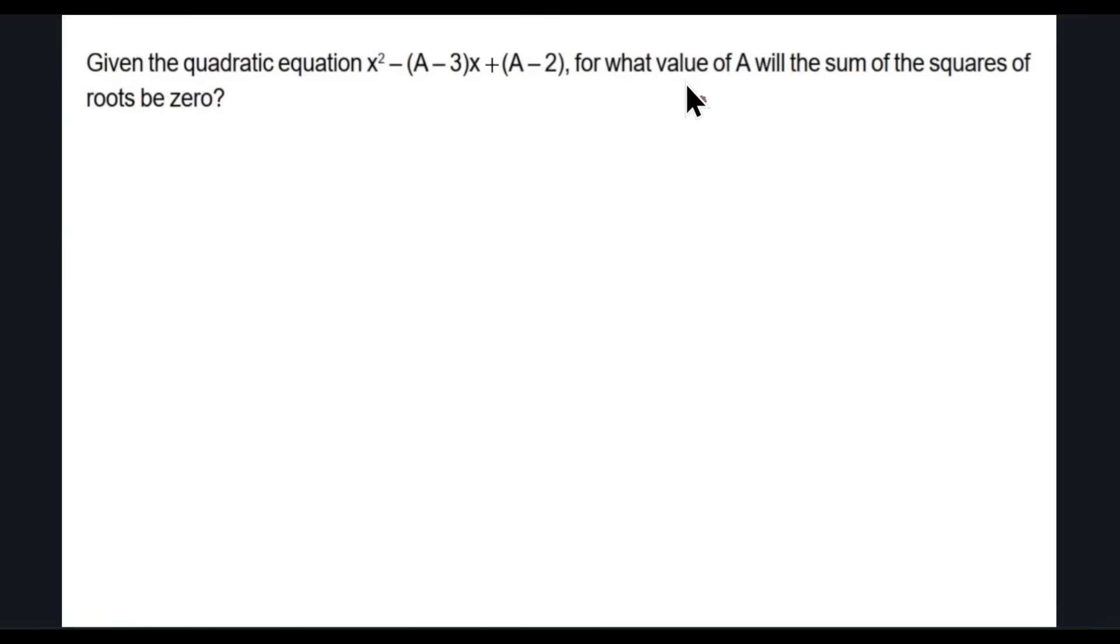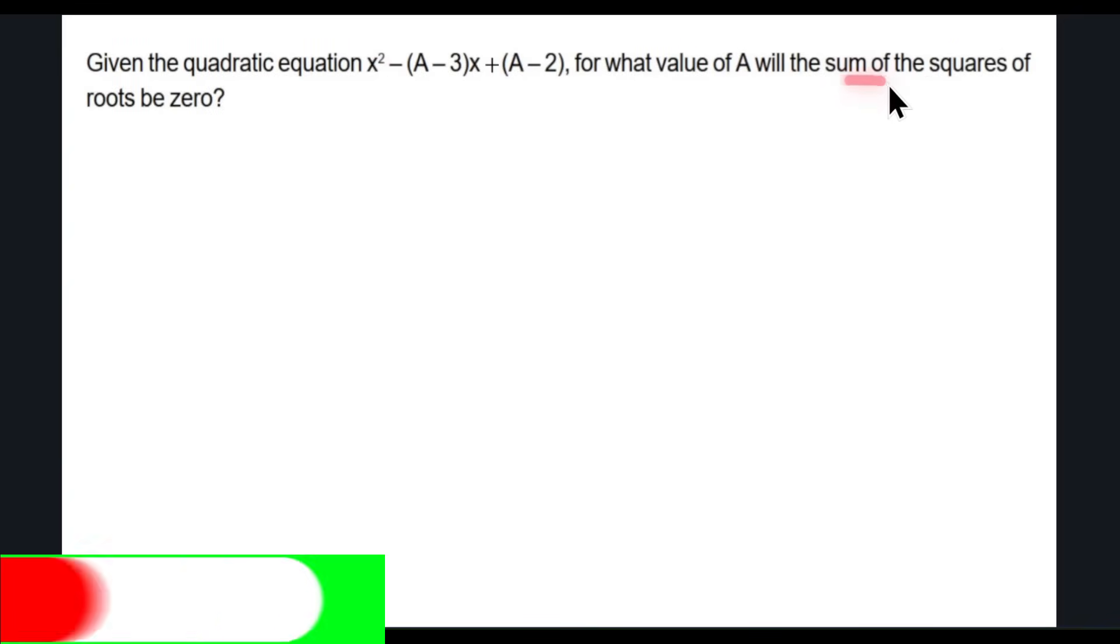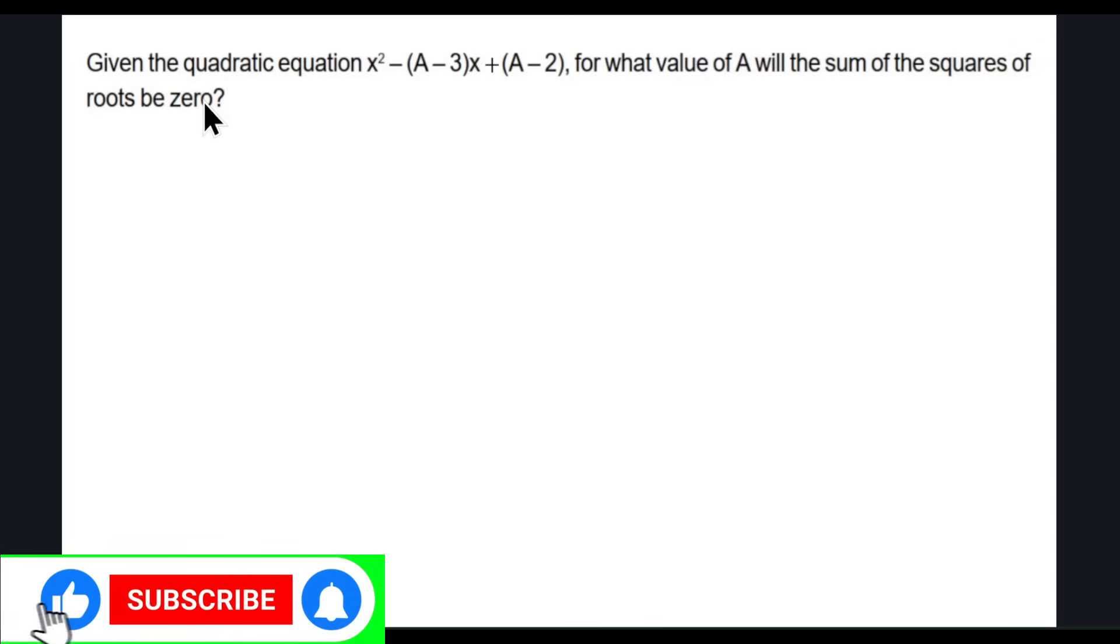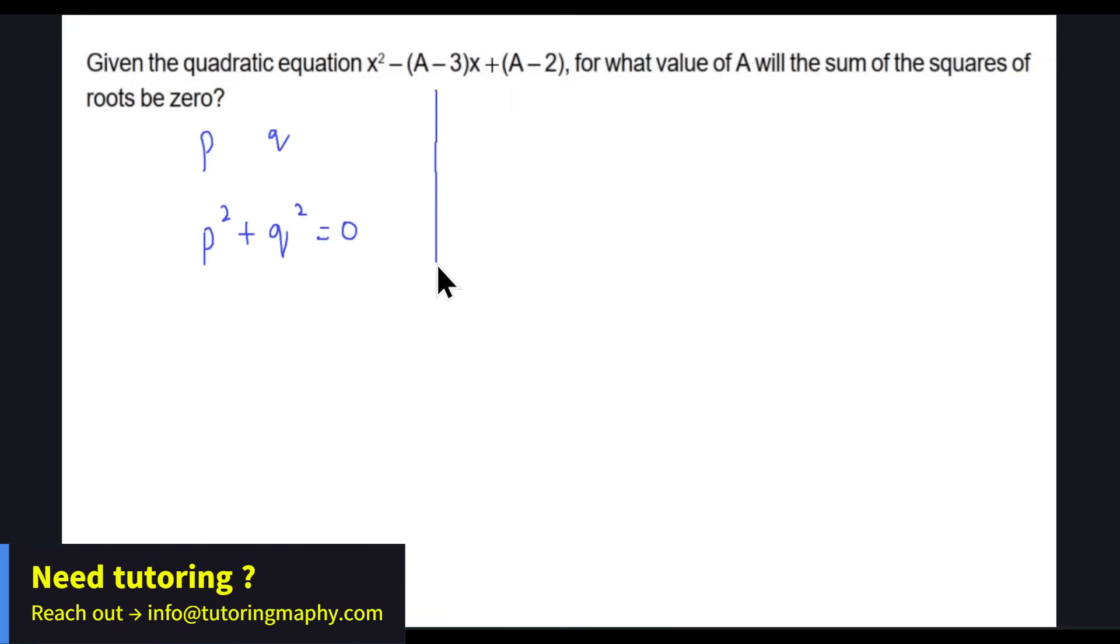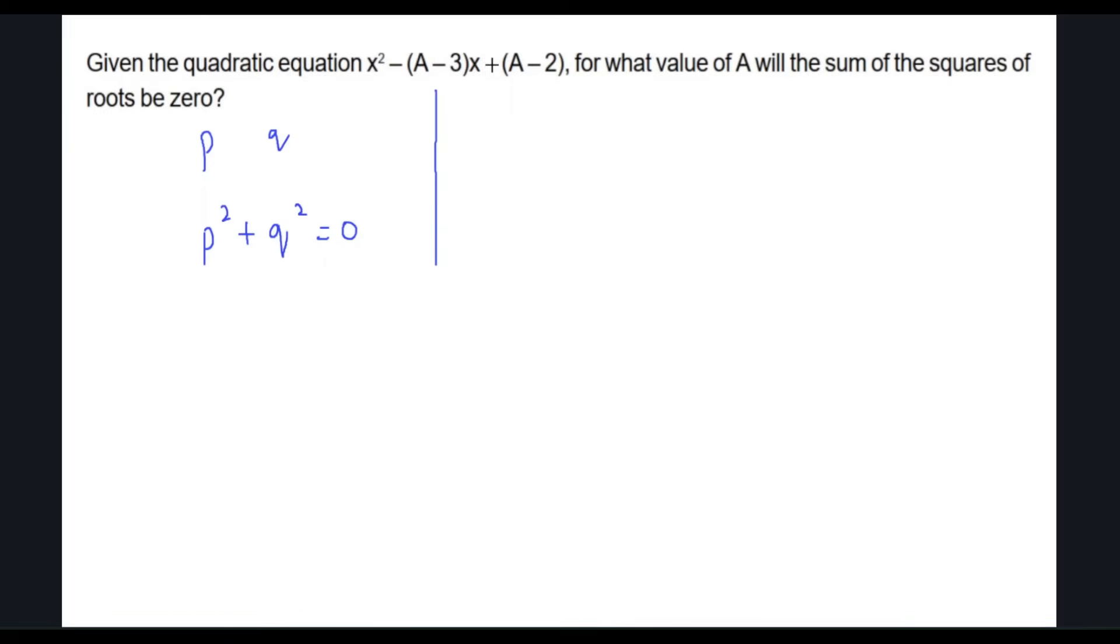We are given a quadratic and we have to find the value of A for which the sum of the squares of the roots be zero. So the sum of the squares, let's say the roots are P and Q, so P squared plus Q squared is zero. I don't really know any direct formula for P squared plus Q squared.